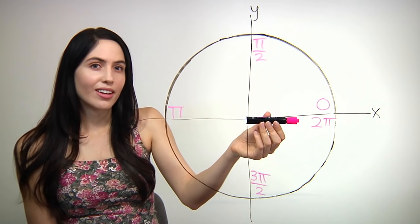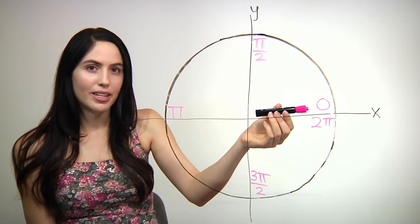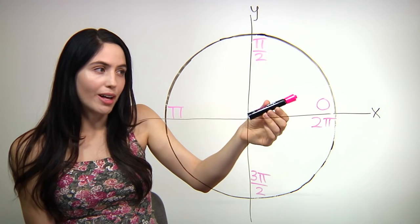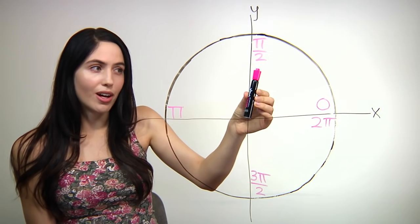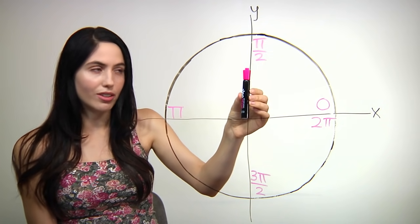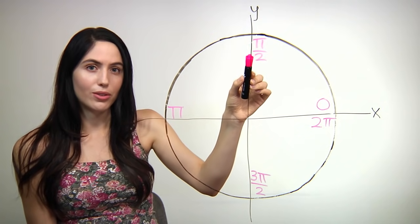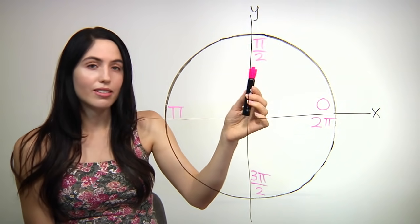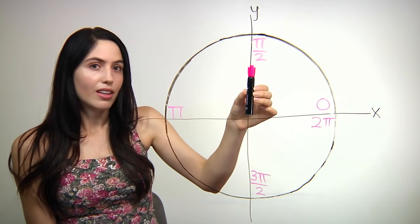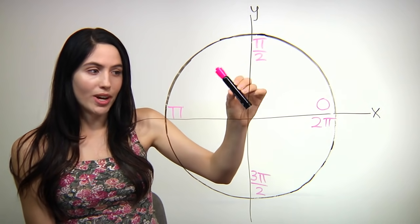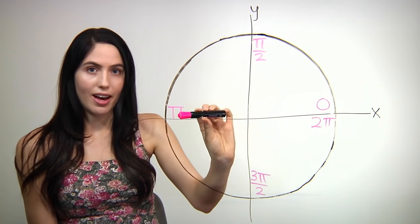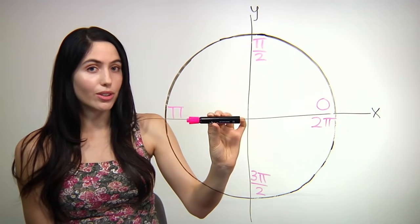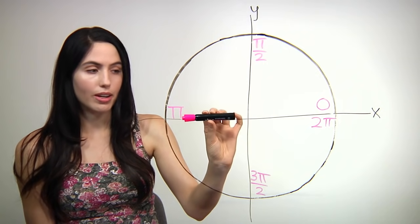This first angle is zero because that's where we're starting. Then if we move up and rotate counter-clockwise through a quarter of the circle, we have the angle pi over two. These angles are in radians, not degrees — they have pi in them. Then if we move another quarter of the way through the circle, we have the angle pi. This is half the circle, so the whole circle will be two times that: two pi.